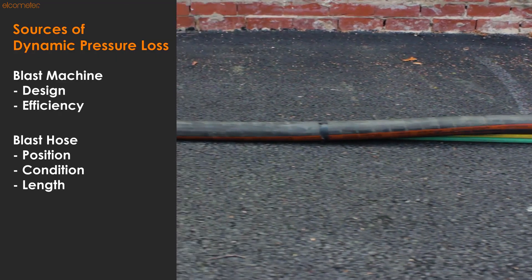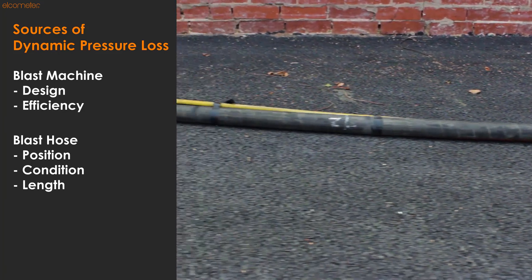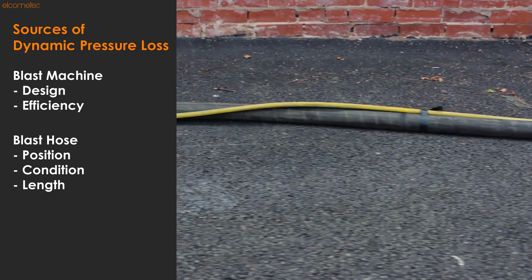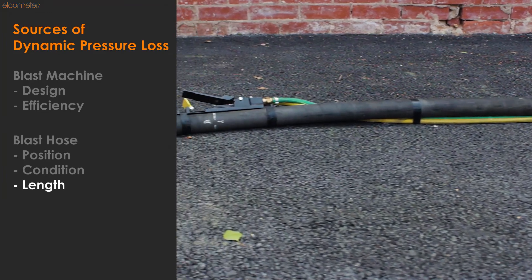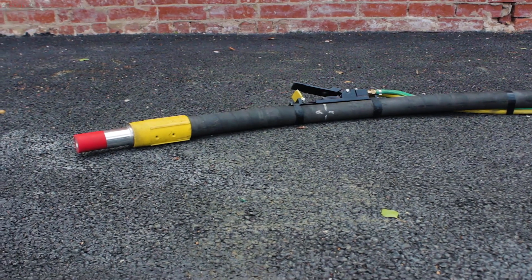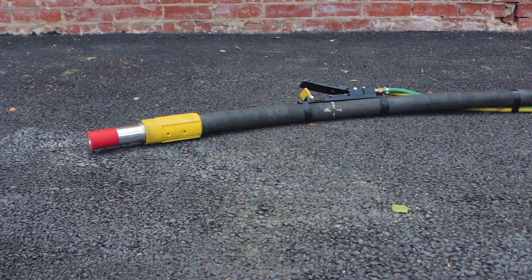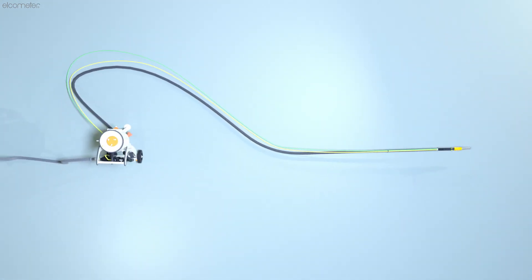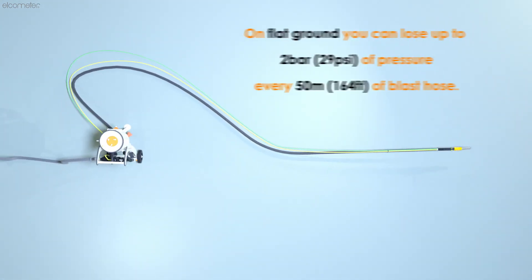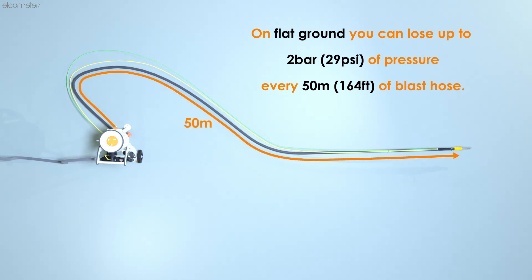The remaining factor affecting the amount of pressure lost in your blast hose is its length. Put simply, the longer the blast hose, the more pressure you lose across the distance. In fact, tests have shown that on flat ground, depending on the compressor pressure setting, you can lose up to 2 bar of pressure across 50 metres of hose. Any elevation changes to your blast hose will affect this further.